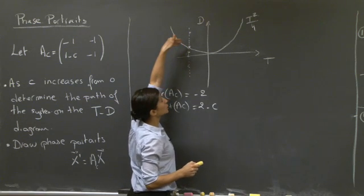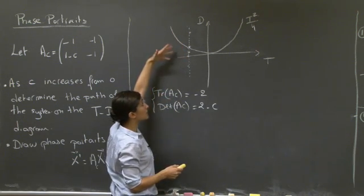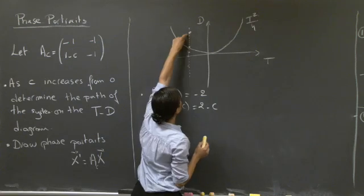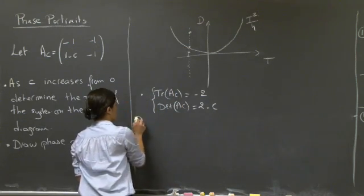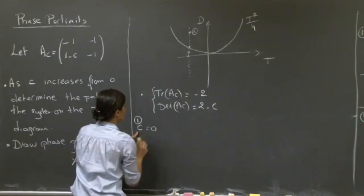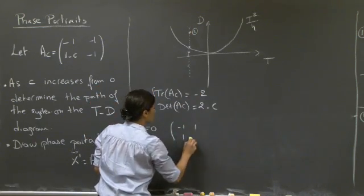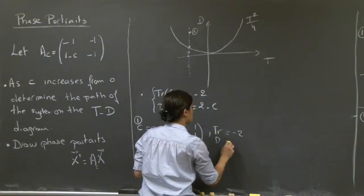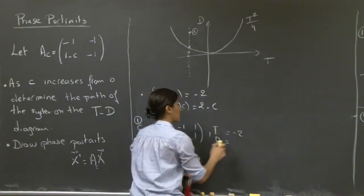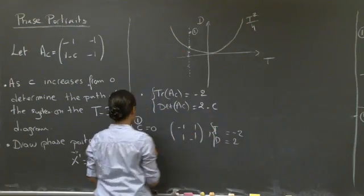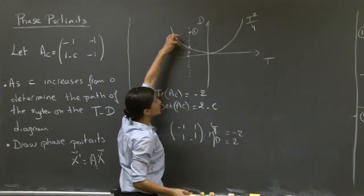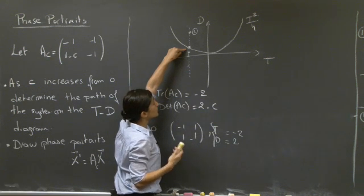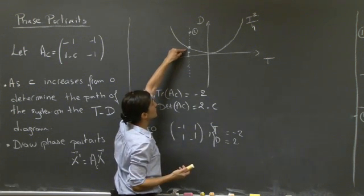Since the trace is minus 2, we'll have either complex values with negative real parts or negative eigenvalues, so we're always in stable configurations. Starting at C equal to 0, we have the matrix minus 1, 1, 1, minus 1, with trace equals minus 2 and determinant equals 2. We're at this point on the diagram and will increase the value of C, moving along this line and crossing the first boundary case involving repeated eigenvalues.